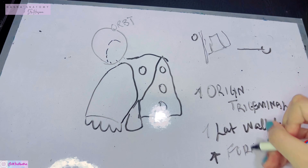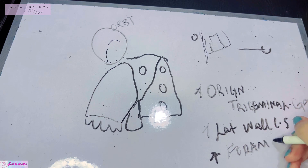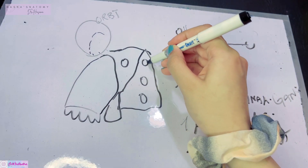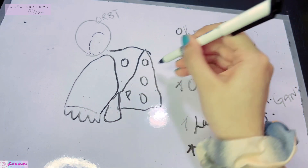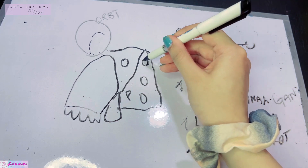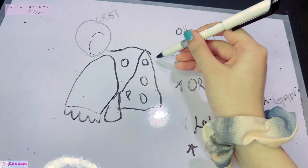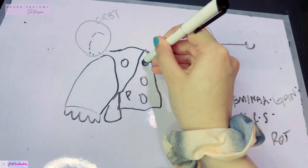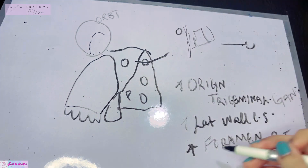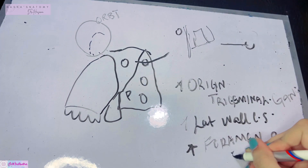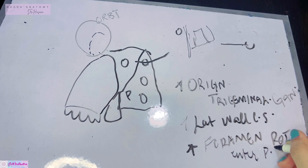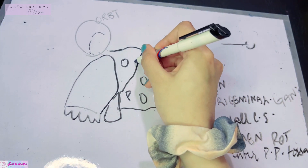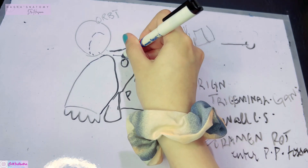Finally, it enters through the foramen rotundum in the middle cranial fossa. In the pterygopalatine fossa, from the posterior boundary there was a communication to the middle cranial fossa through the foramen rotundum, and it is through this foramen rotundum that the maxillary nerve enters the pterygopalatine fossa.